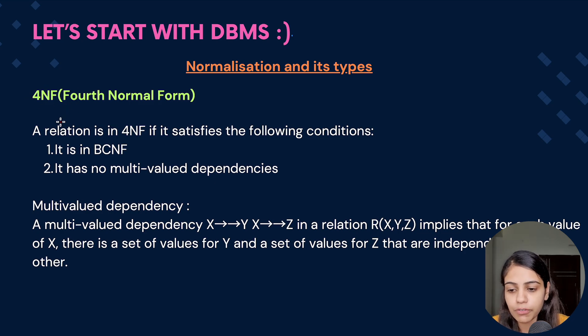Now what is fourth normal form? A relation is said to be in fourth normal form if it satisfies the following conditions. First, it should be in BCNF, that is Boyce code normal form. Second, it shouldn't have any multi-valued dependencies.